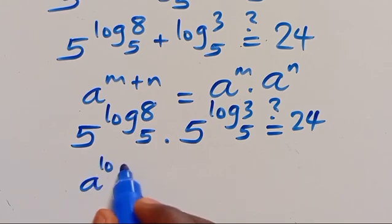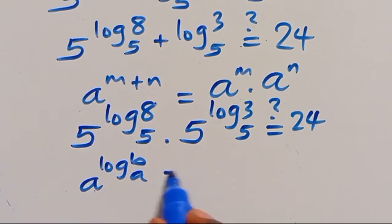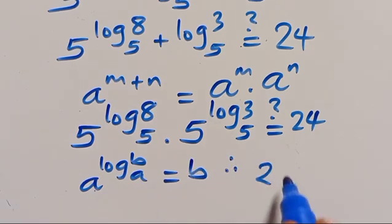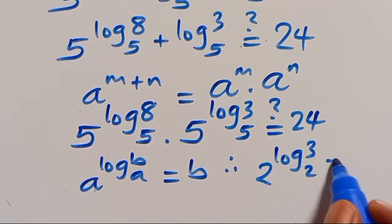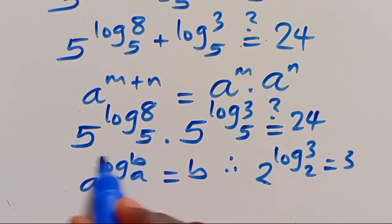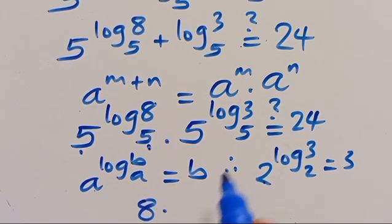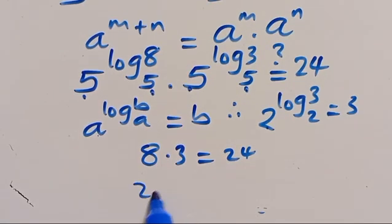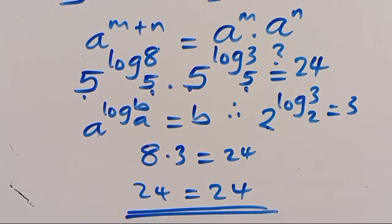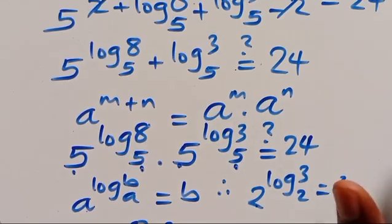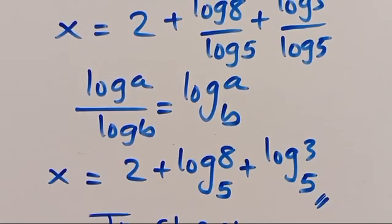When we have a to the power of log base a of b, the output is b — for example, 2 to the power of log base 2 of 3 equals 3. So here 5 to the power of log₅8 equals 8 and 5 to the power of log₅3 equals 3, giving 8 times 3 equals 24. Since the left-hand side equals the right-hand side, the value of X is confirmed correct. If you are new and find this video interesting, don't forget to share, like, comment, and subscribe to our YouTube channel for more math tutorial videos. Bye bye.